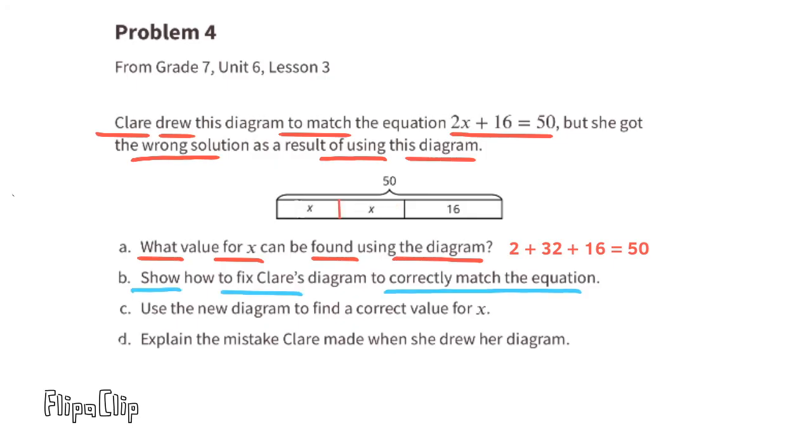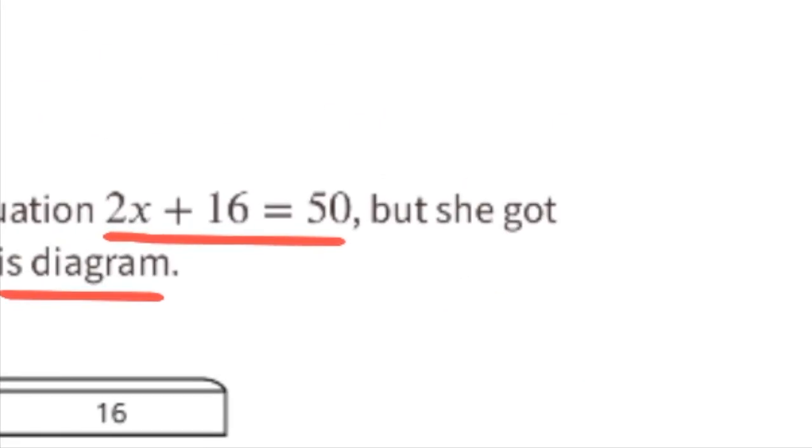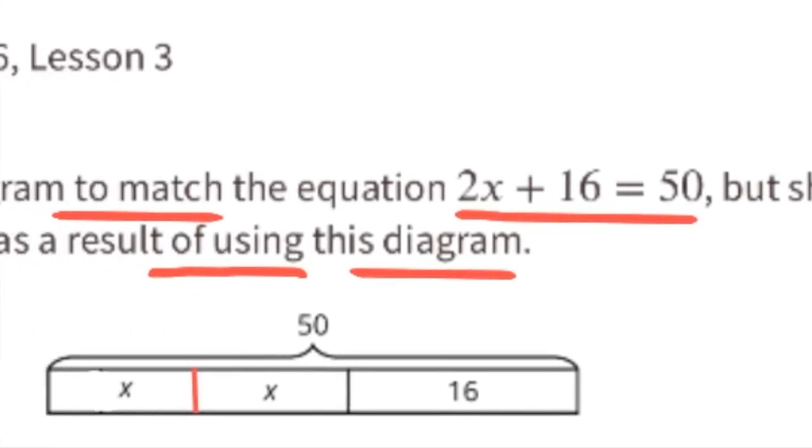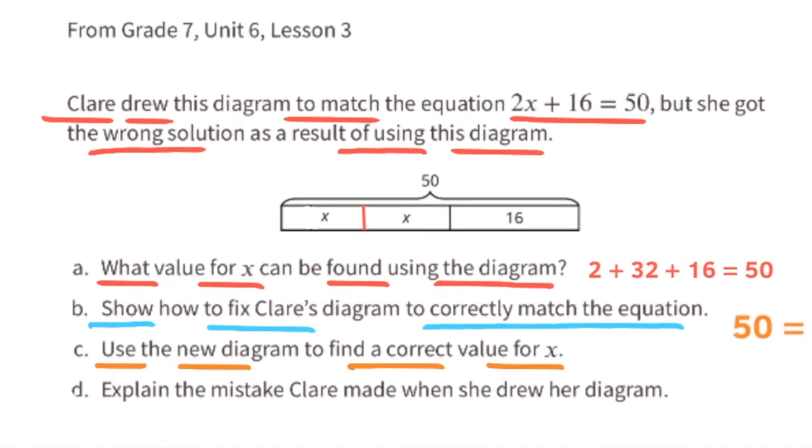Part b: Show how to fix Clare's diagram to correctly match the equation. Go back and look at the equation at the top of the problem: 2x + 16 = 50. 2x means 2 times x, so Clare's diagram needs to have x written 2 times plus 16 equals 50.